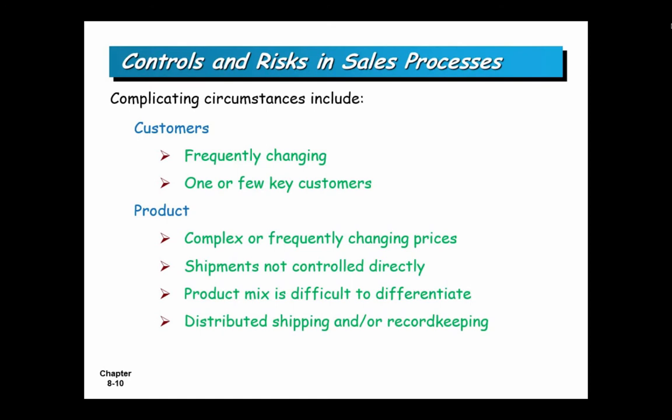If you sell a product mix that's difficult to differentiate — say you sell gravel — depending on the fineness of the gravel, that complicates the sales process since you can't differentiate it and it's hard to measure. If you ship and keep records in many distributed locations, you lose control of record keeping. These are all complicating circumstances requiring good internal controls.